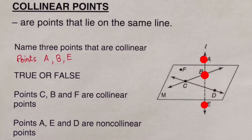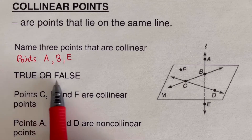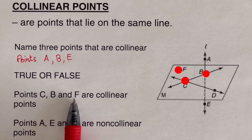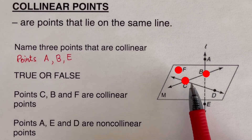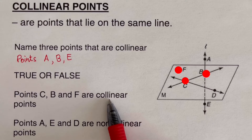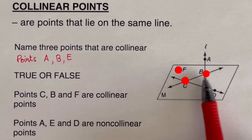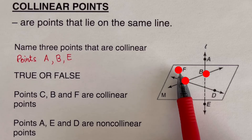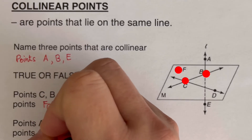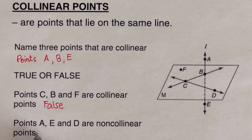Now let's determine if these statements are true or false. First: points c, b, and f — tracing them, collinear means they sit on the same line. Only c and b are collinear, but point f is off. So this statement is false. Please try the next one out on your own.